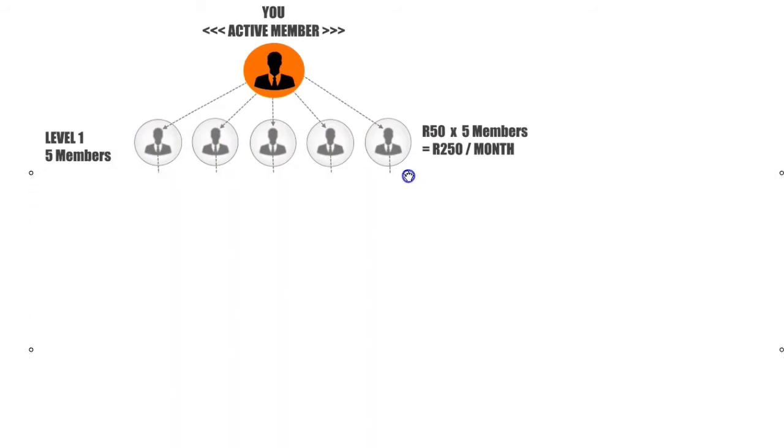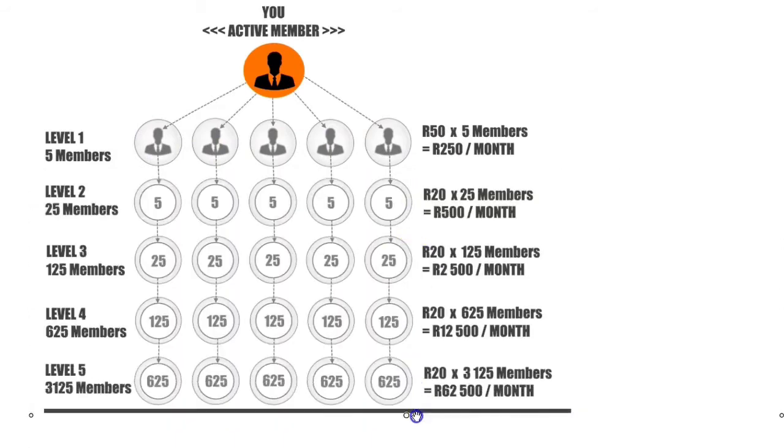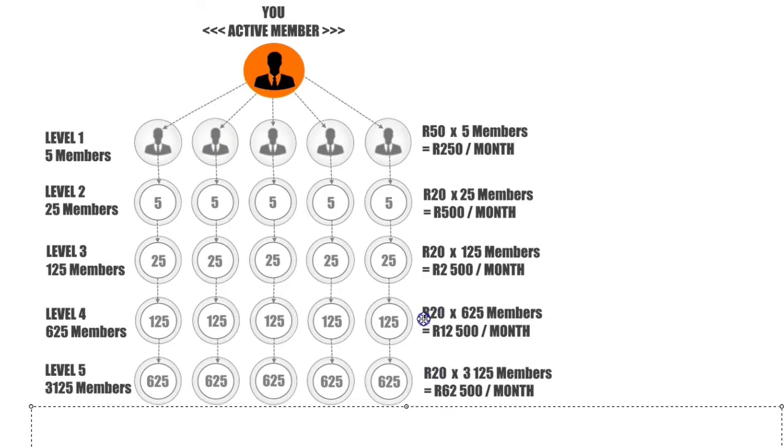In Levels 2, 3, 4, and 5, you will start earning unlimited 20 Rand commission payments on autopilot because your referred downlines will now be doing all the work for you and making you money on autopilot.